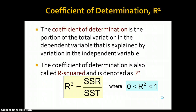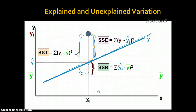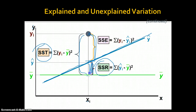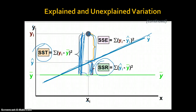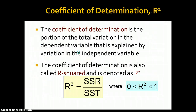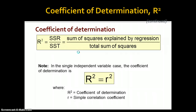The coefficient of determination is the portion of the total variation in the dependent variable that is explained by variation in the independent variable. We also call it r squared, and it's a ratio: sum of squares regression divided by sum of squares total. It gives you a proportion which you can then multiply by 100 to get how much variation in y is explained by x. That's your r squared.